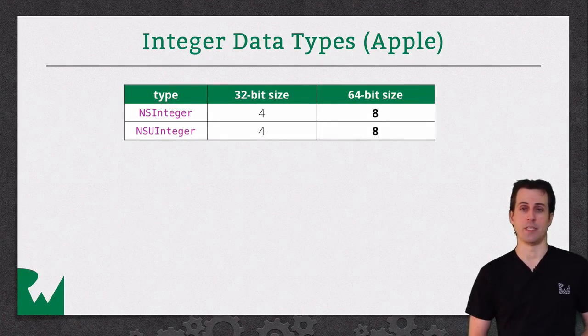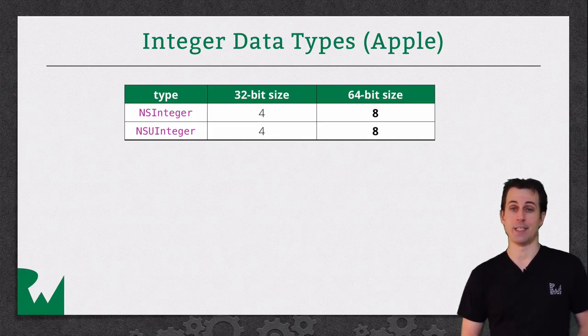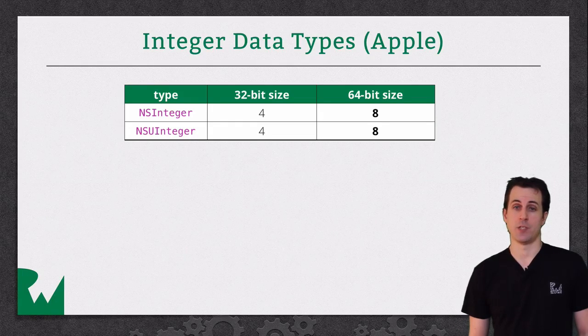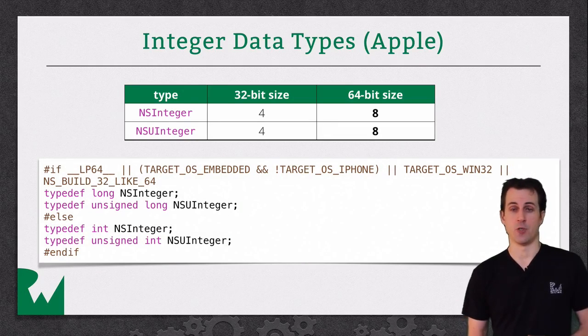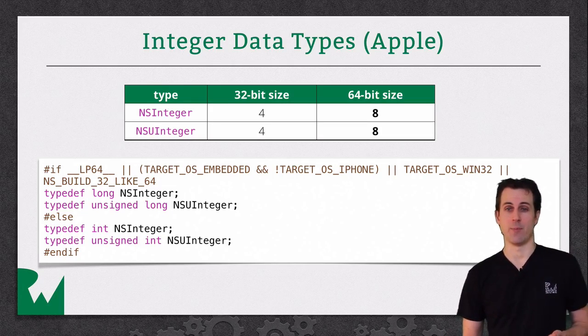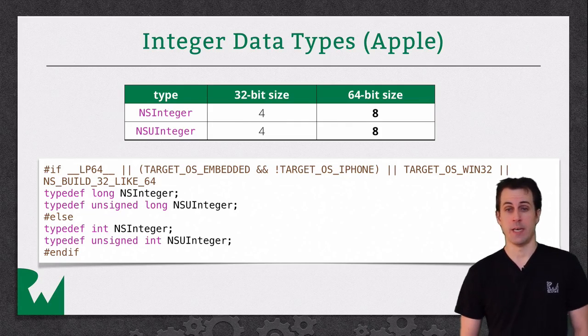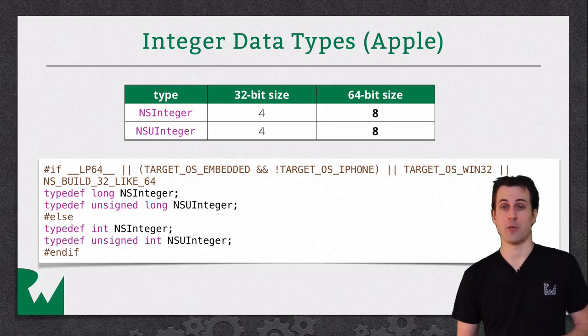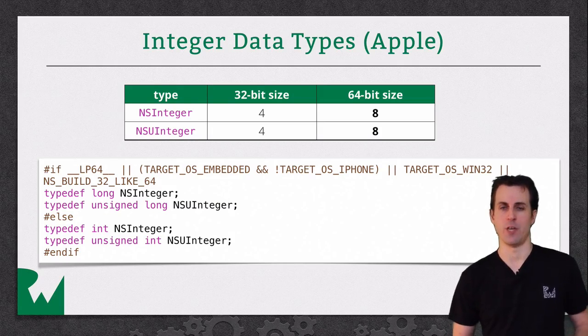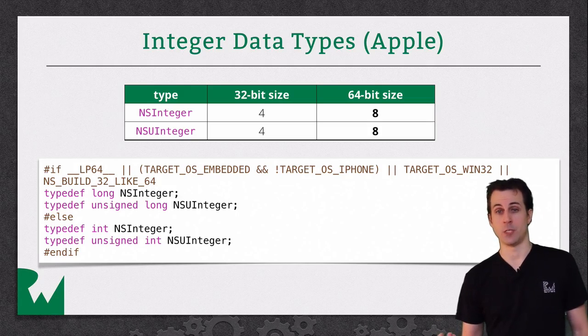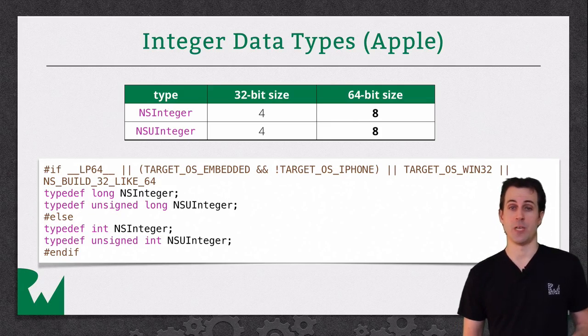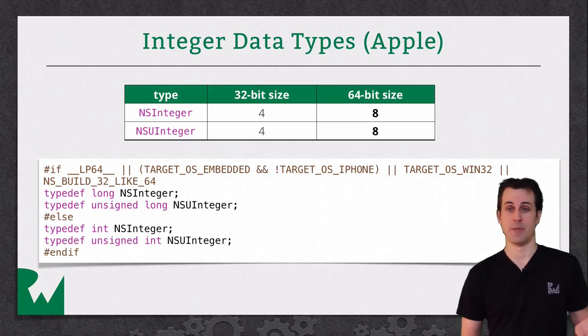The second type of data types you need to know about is the Apple data types. Apple's actually defined their own versions of integers, NSInteger and NSUInteger for the unsigned version. They are defined to be four bytes on a 32-bit OS and eight bytes on a 64-bit OS. If you look at the definition, NSInteger is actually just defined as an integer on 32-bit OS and as a long on 64-bit OS. Why does this exist? It's there for historical reasons. In the old days, some APIs that should have been returning long were actually returning int. So Apple needed an easy way to transition those APIs from 32-bit to 64-bit architecture. They're still used heavily in Apple APIs today, so you'll see NSInteger a lot.